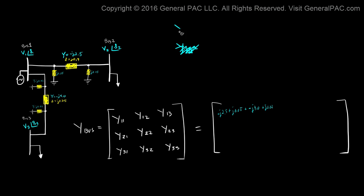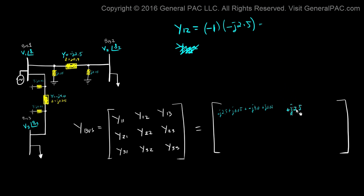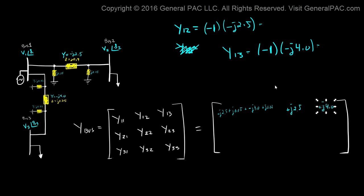Y12 is an off-diagonal element, so it equals negative 1 times the admittance from bus 1 to bus 2, which is negative J2.5, giving positive J2.5. Y13 likewise equals negative 1 times the admittance from bus 1 to bus 3, which is negative J4.0, giving positive J4.0.